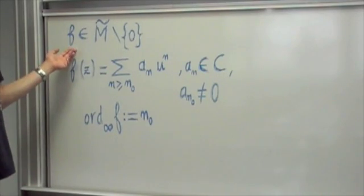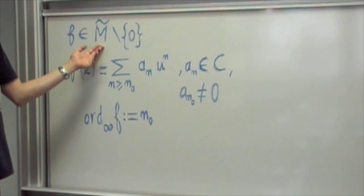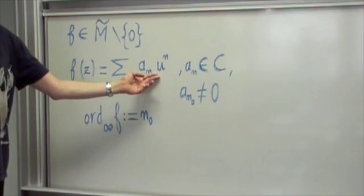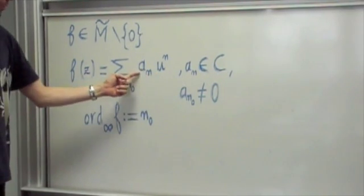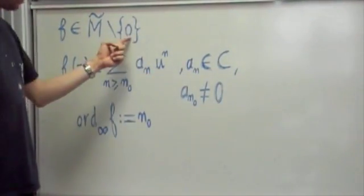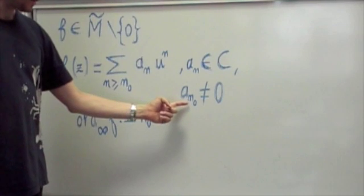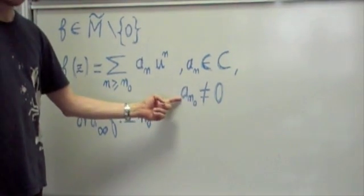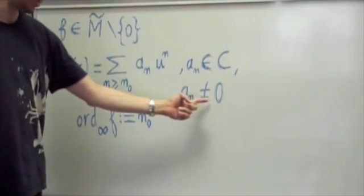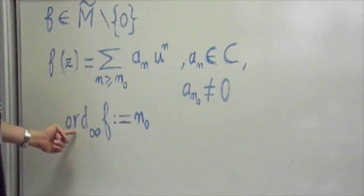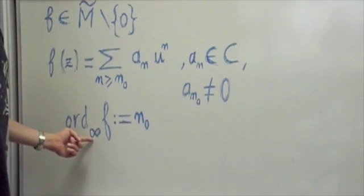To every element F in M-tilde, there exists a unique expansion in powers of U with coefficients a_n in C. If F is non-zero, then there exists a smallest integer n_0 such that the corresponding coefficient is not zero. We call this integer the order of vanishing of F at infinity.